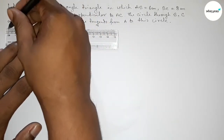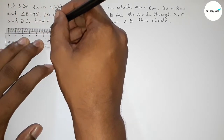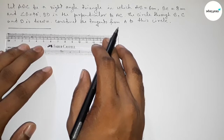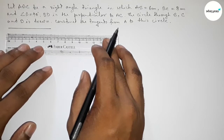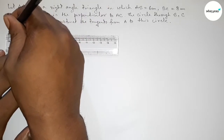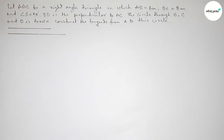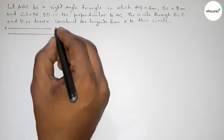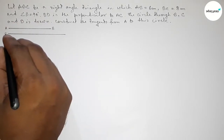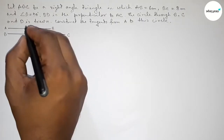Let's start the video. First of all, we have to draw the two given sides: 6 centimeter and 8 centimeter. This is the 6 centimeter line AB, and this is the 8 centimeter line BC.